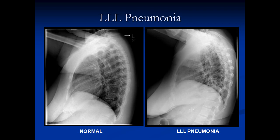On the normal lateral film, you can see the right hemidiaphragm going all the way to the front and the left hemidiaphragm going to the heart. On the left lower lobe pneumonia lateral view, you can see all of the right diaphragm, but you don't see any left diaphragm — there's consolidation on top of that diaphragm, so we've lost the interface between air and soft tissue.